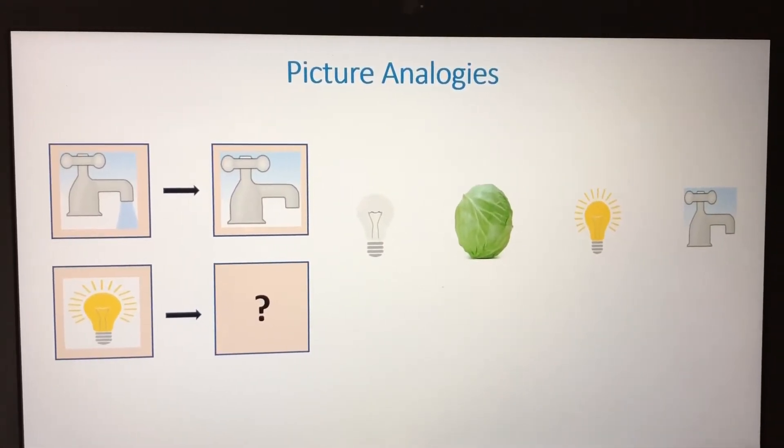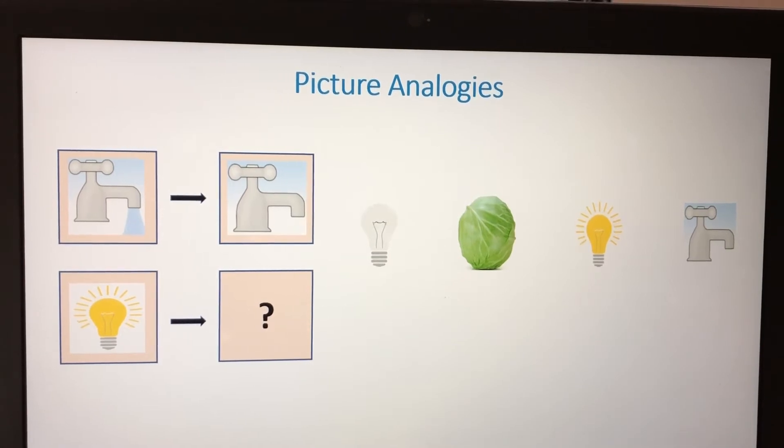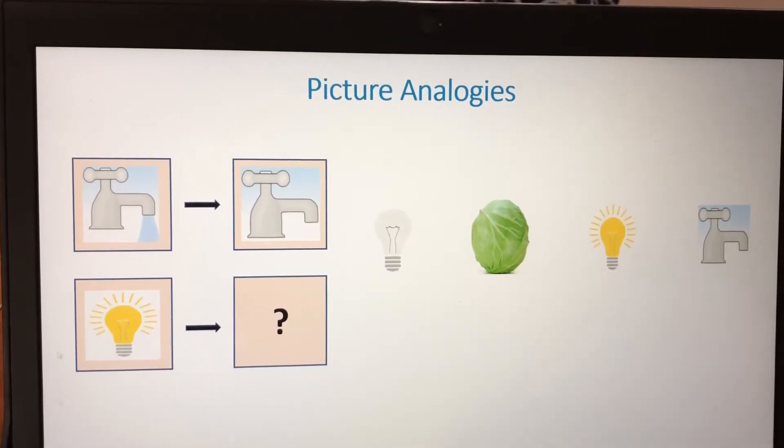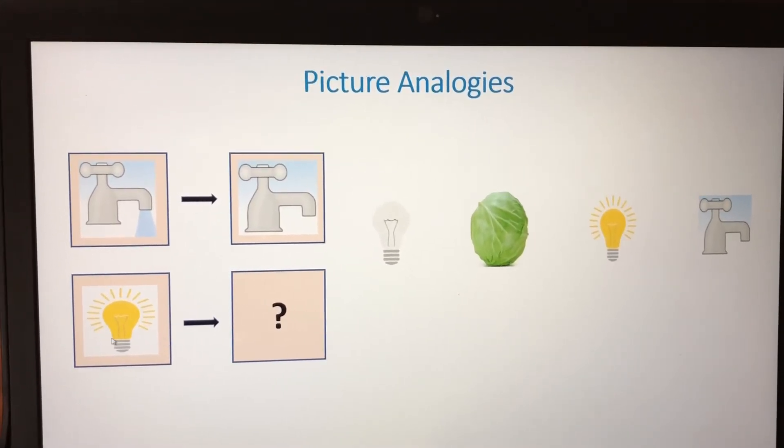Picture Analogies. The first picture is a tap on and the second is a tap off. In the bottom, the light is on. What will be the answer?